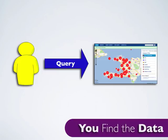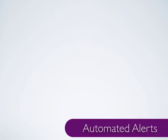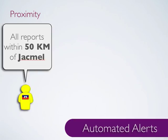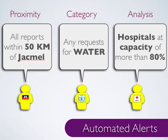Instead of requiring users to spend time querying the constantly changing data that has been collected, users can instead be alerted via email or SMS when information they are interested in is received by the platform. These alerts can be tailored to automatically trigger based on report proximity, category, and analysis.